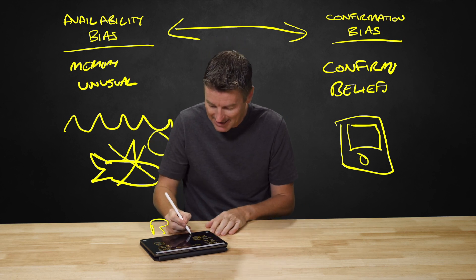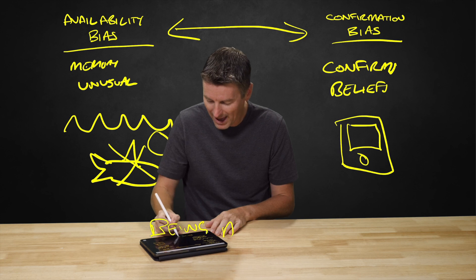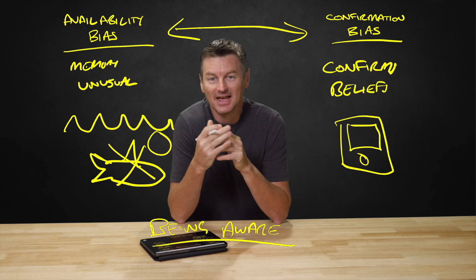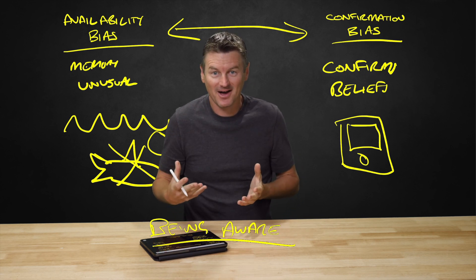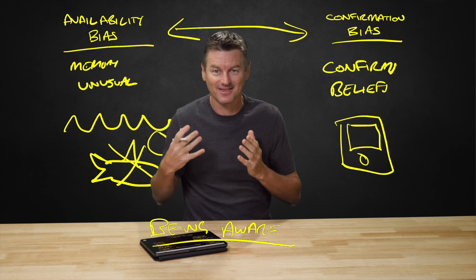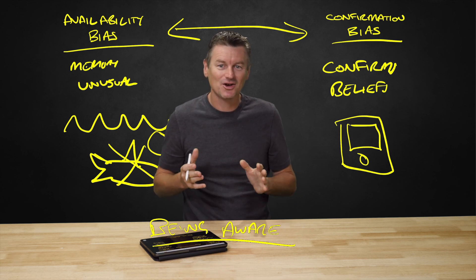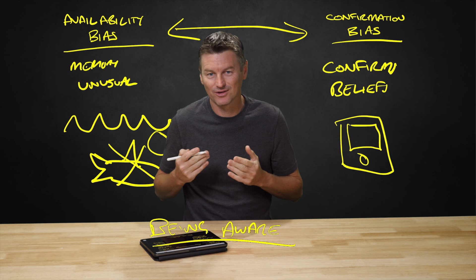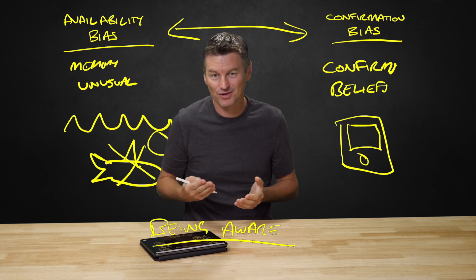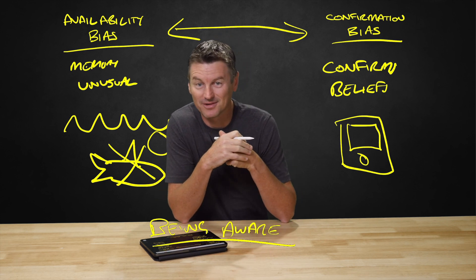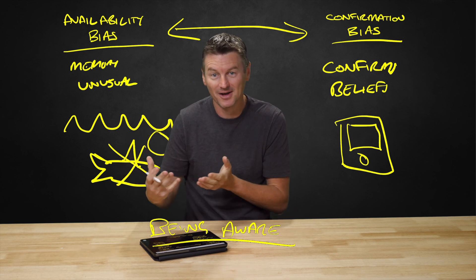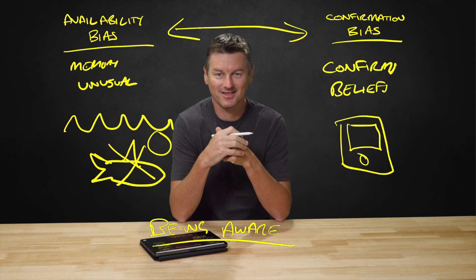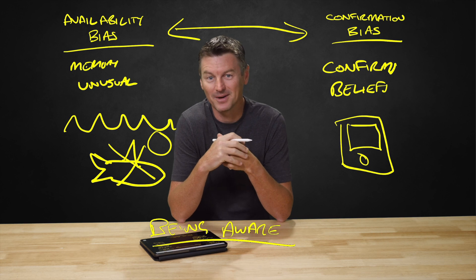So how do you avoid these traps? Simply by being aware of them. If you're able to identify that you are experiencing availability bias, you can make the right decision. It's also good practice to avoid using a single source of information for your research, or consider consulting someone who has a different view on the topic. This way you reduce your chances of getting blinded by confirmation bias.